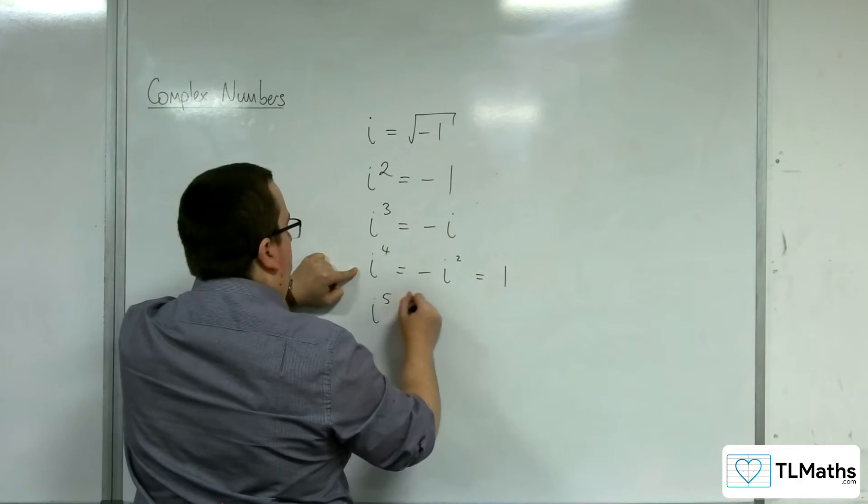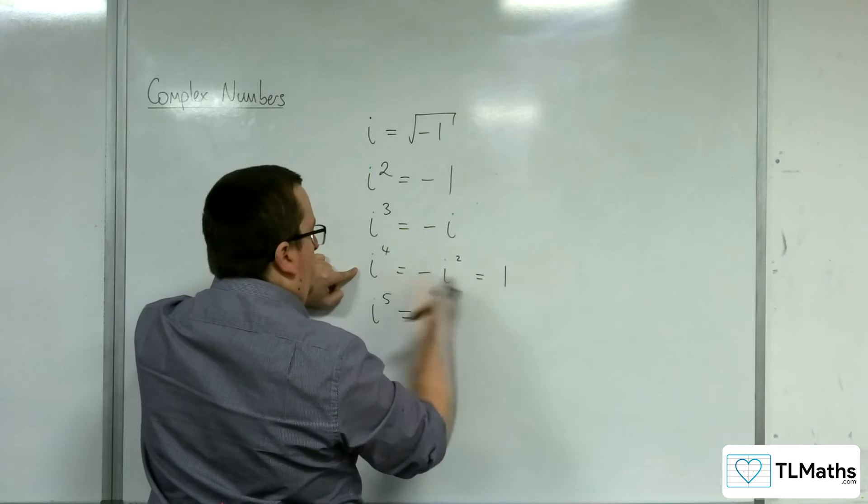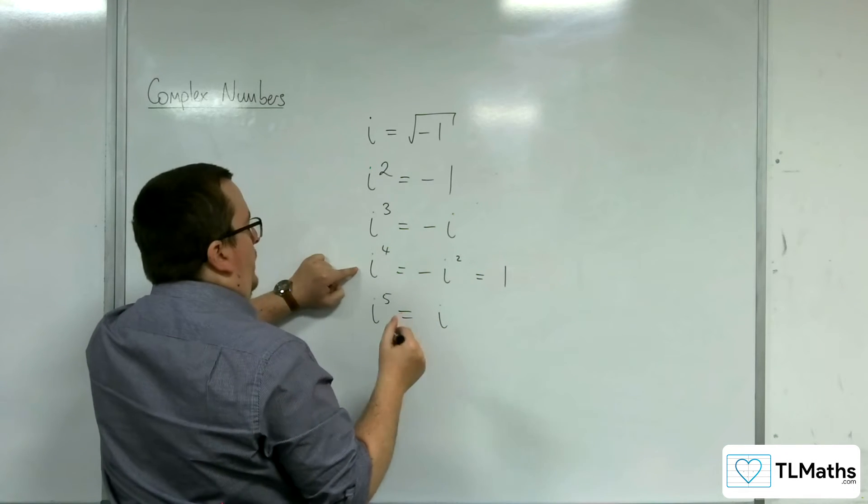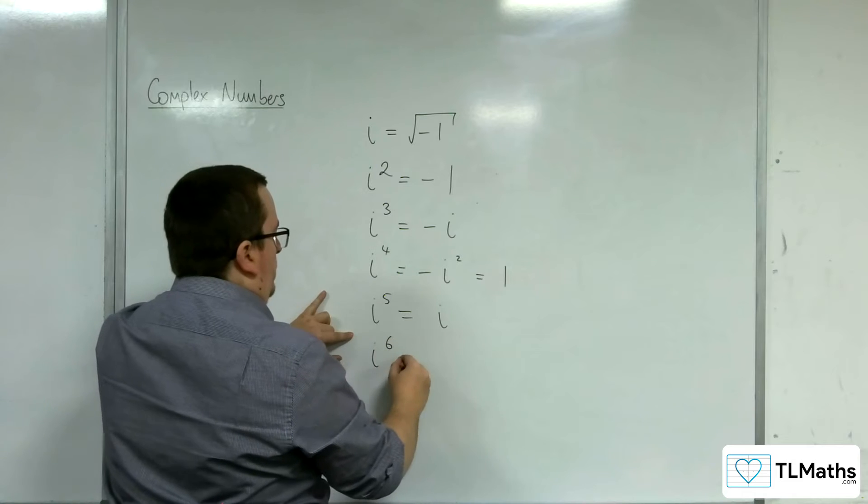So i to the 5, multiplying both sides by i, must therefore be i, and the pattern continues.